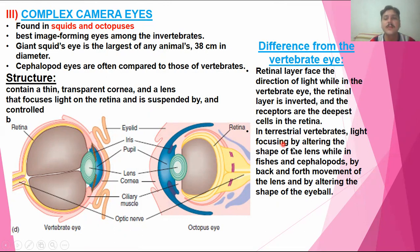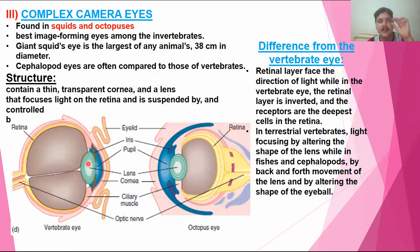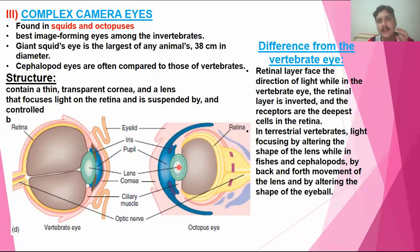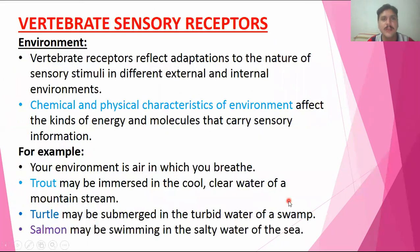In vertebrates, light focusing occurs through changes in lens shape — the lens dilates or constricts as the pupil moves to adjust light intensity, altering the lens shape accordingly. However, in the case of the octopus and other invertebrates, there is no such change in lens shape. Instead, they move their lens forward and backward — back and forth movement — by altering the shape of the eyeball to adjust their vision. This concludes the discussion of different structures and receptors present in different animals.